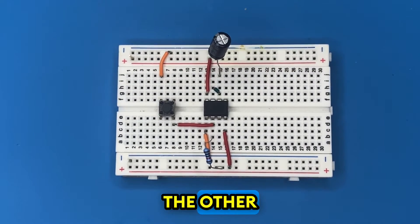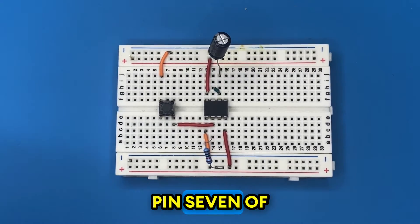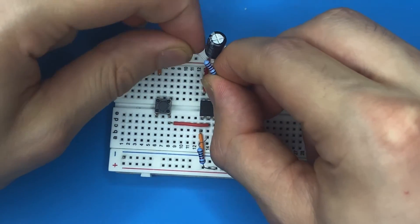Let's grab the other 10 kilo ohm resistor and connect it to pin seven of the IC and to the positive rail of the breadboard.